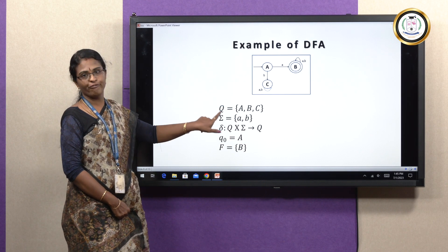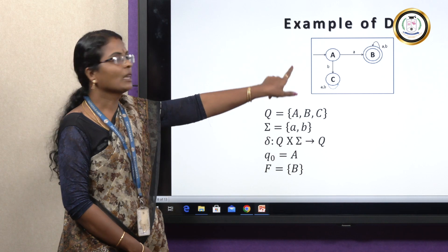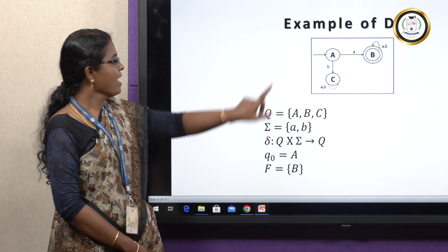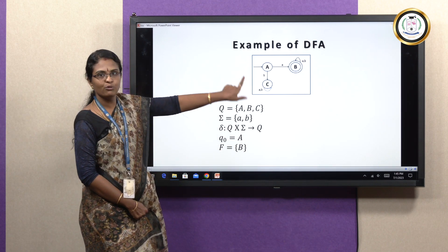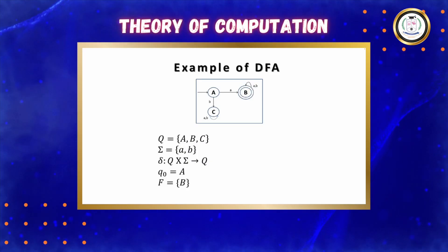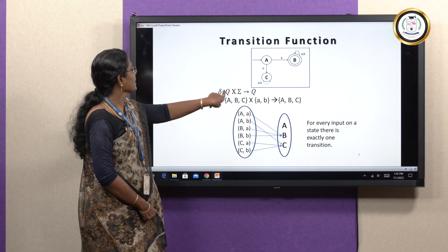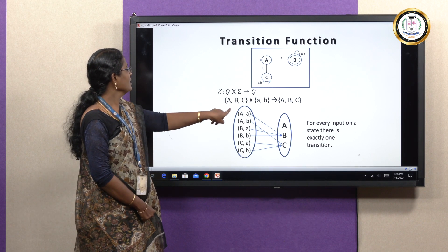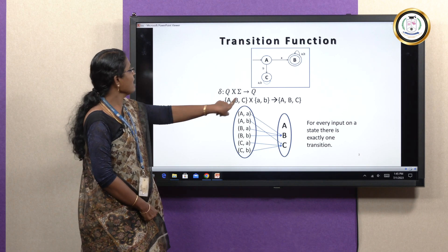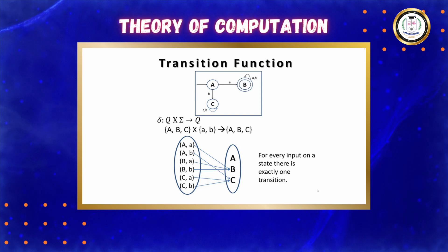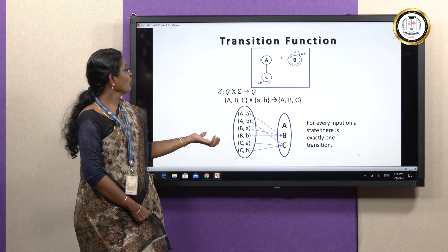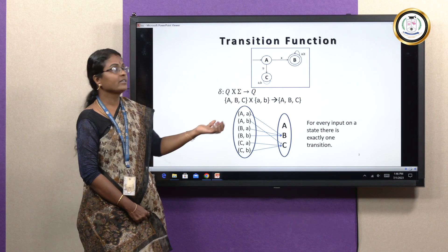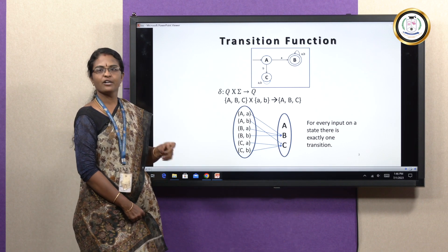Q is the finite set of states, which includes states A, B, and C. Σ is the finite set of input symbols used in this problem: A and B. For the transition function δ, you perform the mapping of Q × Σ — producing transitions such as A→A, A→B, B→A, B→B, C→A, and so on — to get the transition function for all states and input symbols.